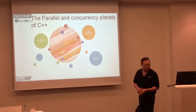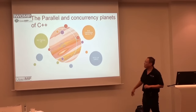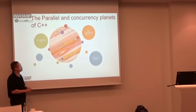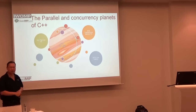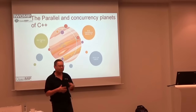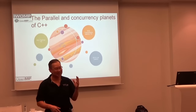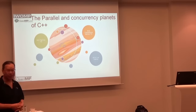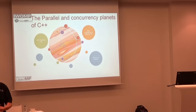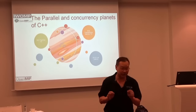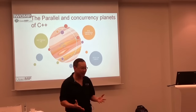The parallel and concurrency universe looks like this. We have the mother planet of WG21 with the core working group, evolution working group, library working group, and library evolution working group. Orbiting these are moons of parallelism and concurrency: SG1 handles most parallelism and concurrency ideas, SG5 handles transactional memory, and SG14 handles low latency — which mostly involves concurrency and parallelism but specifically must be performance-capable.